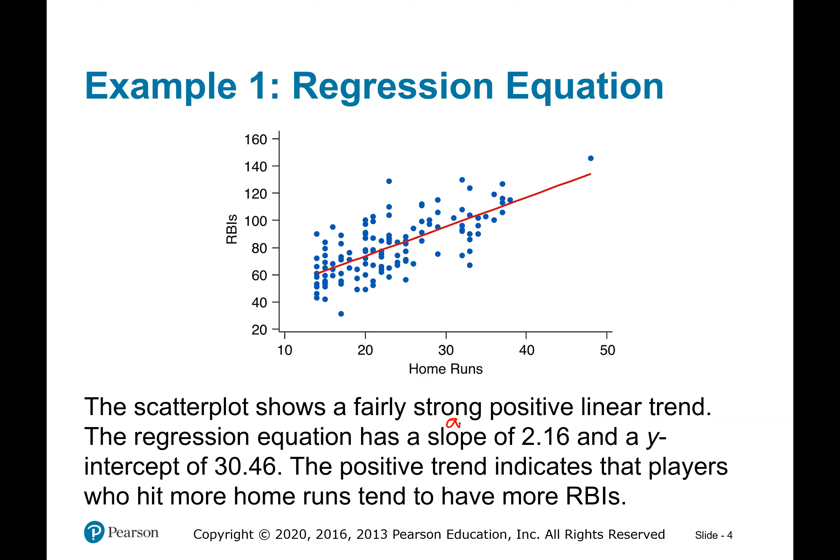In my class, you can use a calculator or you can use StatCrunch to calculate all of this. The y-intercept is going to be 30.46. The positive trend indicates that players who hit more home runs tend to have more RBIs.